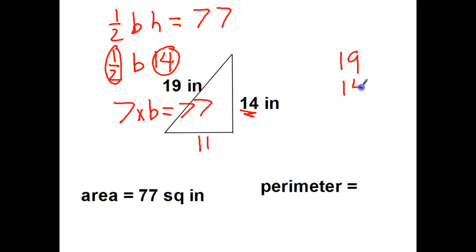Add up all my sides to get to the perimeter. A 19, a 14, and an 11. There's 10 plus 4 is 14. Carry my 1. 1, 2, 3, 4. 44 inches. And that's how I find the area and perimeter of a right triangle.